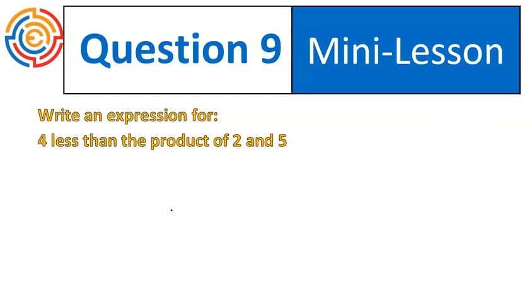Question number nine. Write an expression for four less than the product of two and five. I've got that four less than. Remember where that goes. Four less than. That means when you see that less than, it means that it goes on the end. The product means multiplication. So this will be the product of two and five. We start with the product of two and five, and then we have four less than that amount. So we start with that product of two and five, and then we subtract four. That's four less than the product of two and five.